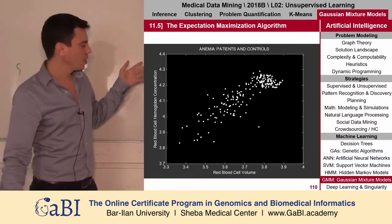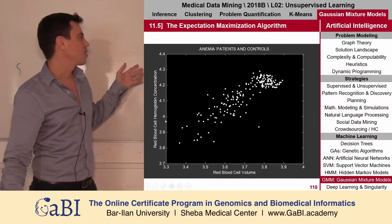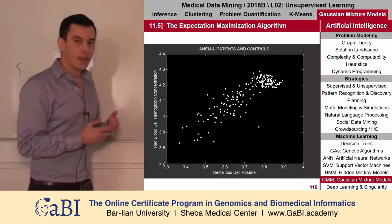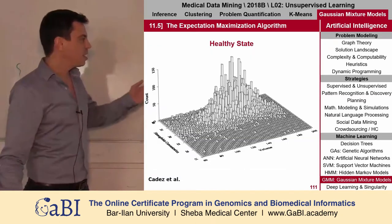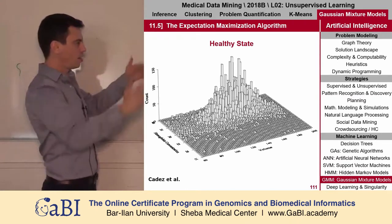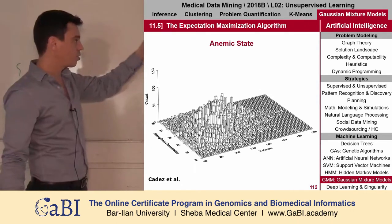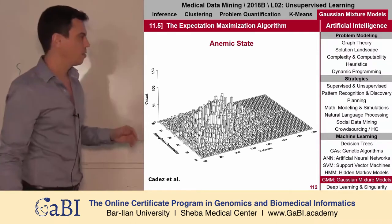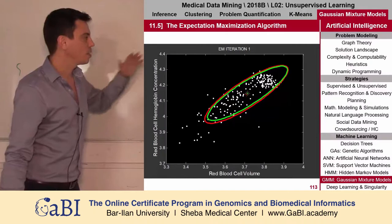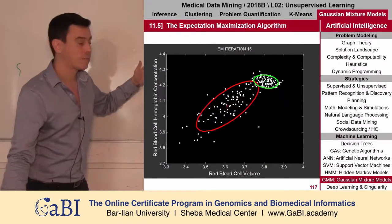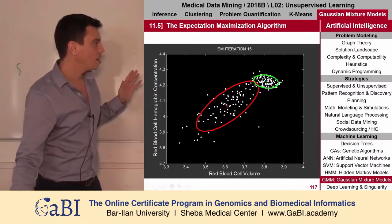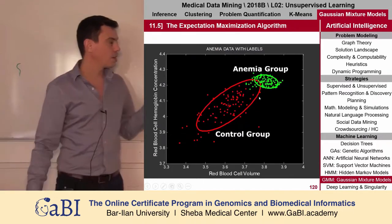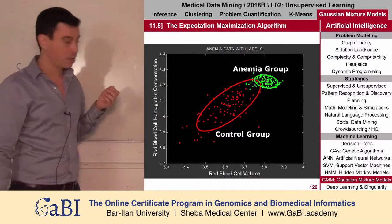Here's a nice example: anemia patients and controls. We look at red blood cell volume and red blood cell hemoglobin concentration — two groups, the control group and anemia patients. Using the GMM algorithm, we can see how the Gaussians are distributed. Here in three dimensions: this is the healthy, this is the anemic. We run the GMM algorithm, and after only 15 iterations we converge. Each shape here is a Gaussian curve, and eventually we can detect who are the anemic patients and who are the healthy ones.